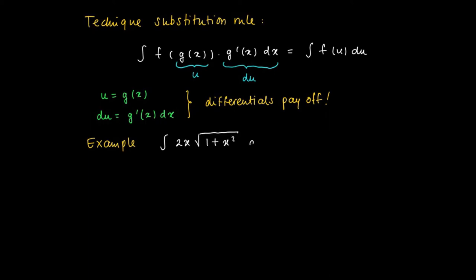Now we want to substitute u equals 1 plus x squared. So if we take u is 1 plus x squared, then under the square root we find u and in front of the square root we find the derivative of u with respect to x. So du equals 2x dx.